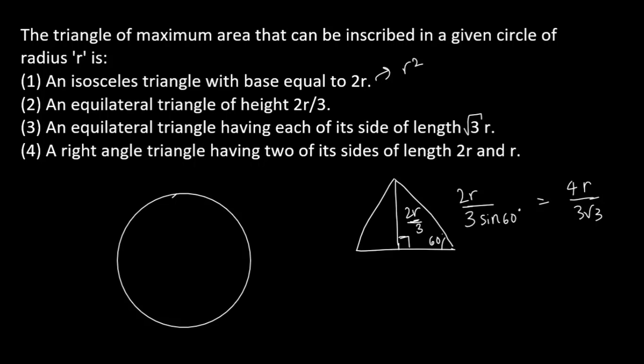This is 4R by 3 root 3 and this is the side length of this equilateral triangle. And area nikaalne ke liye hum root 3 by 4 A square use karenge which will give us root 3 by 4 times 16R square divided by 27 and that will give us 4R square divided by 9 root 3.